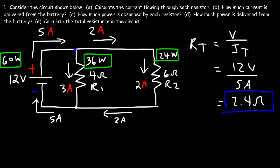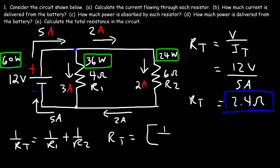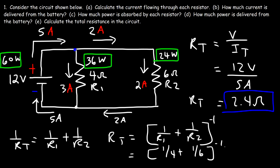We can use the parallel resistance formula to confirm this answer. For a parallel circuit, 1 over RT equals 1 over R1 plus 1 over R2. Raising both sides to the minus 1, the total resistance becomes 1 over R1 plus 1 over R2, raised to the negative 1 power. R1 is 4 and R2 is 6, so 1/4 plus 1/6 equals 5/12. Raised to the minus 1, you get 12/5, which is 2.4 ohms — the same answer. Now you have two ways to calculate the total resistance of a parallel circuit.